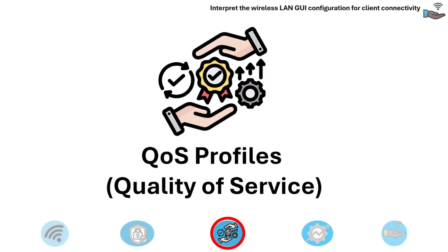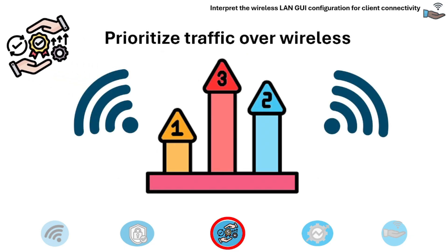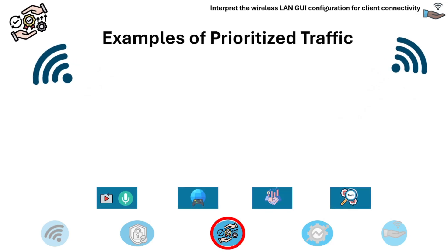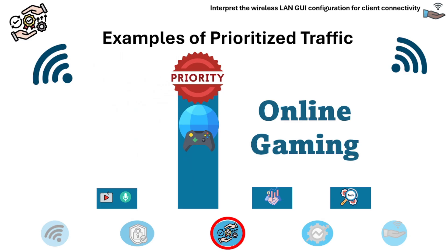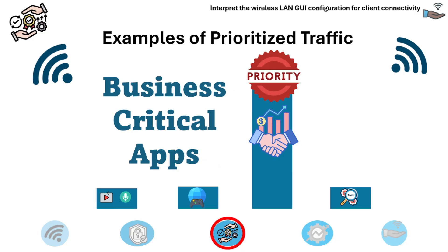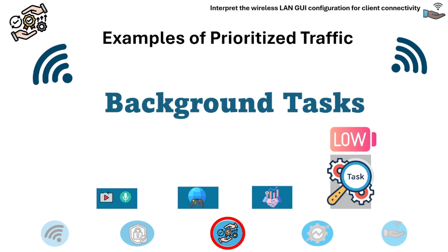The next wireless configuration setting is Quality of Service profiles. The purpose of QoS is to prioritize certain types of traffic over wireless. Voice over IP calls and video conferencing are highly sensitive to latency and jitter, so they are typically prioritized. Online gaming traffic is often prioritized for low latency and a responsive experience. Business applications like financial transactions or remote server access may be prioritized for reliable operation. Tasks like software updates or large file downloads are classified as lower priority and may be queued or delayed.